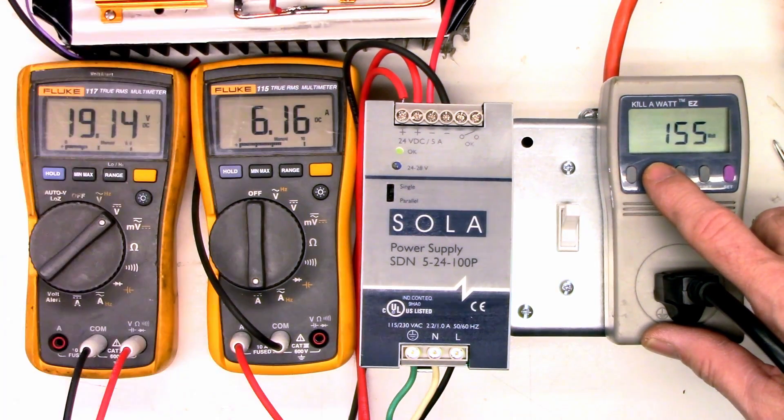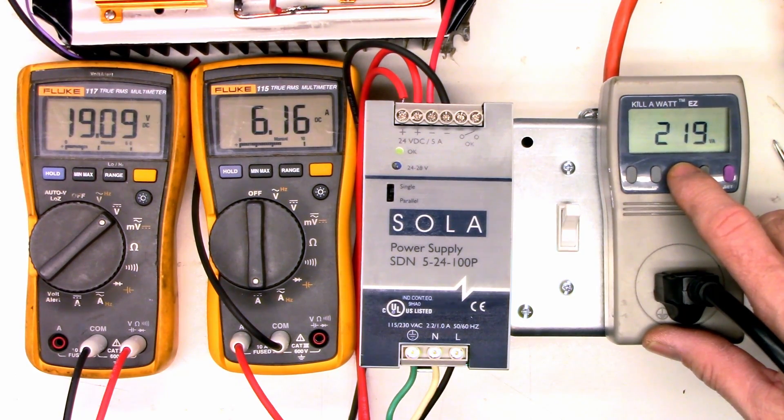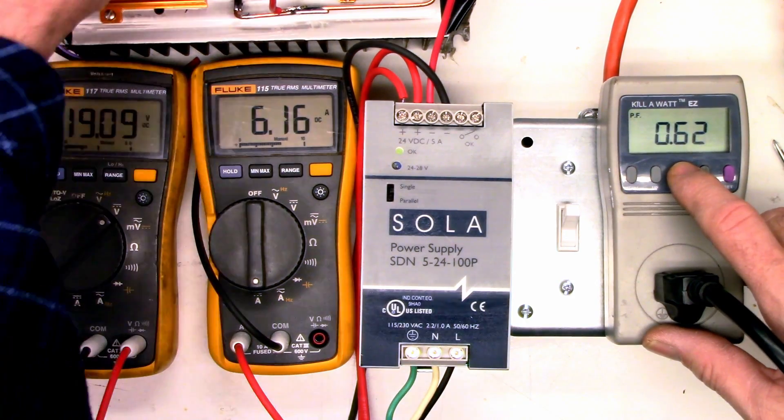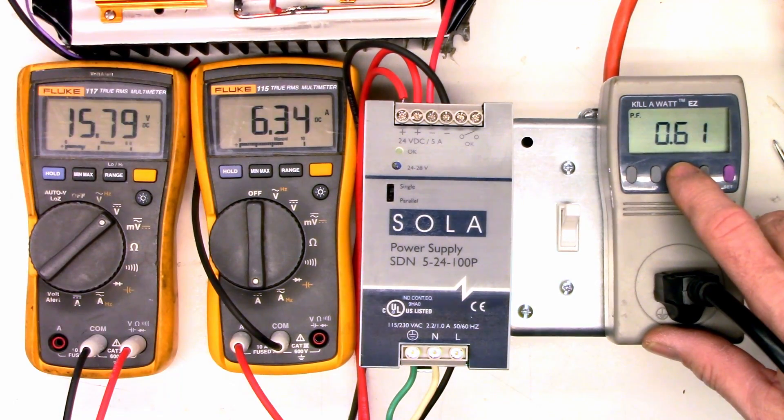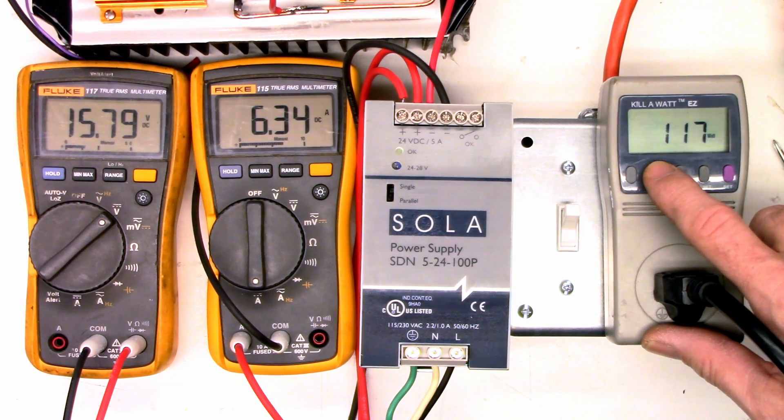Let's overload this. So now we're overloaded. Watts, 136. VA, 219. Power factor, 0.62. And severely overloaded, the power factor has dipped down to 0.60, 0.61. Our VA is 191. The watts is now 117.